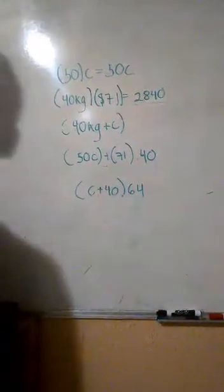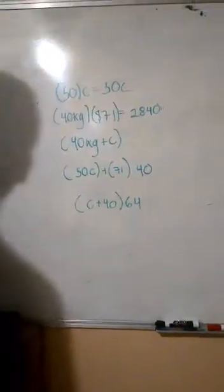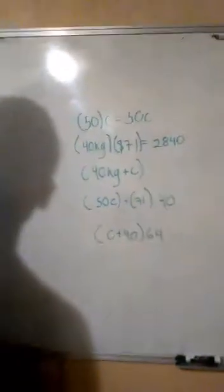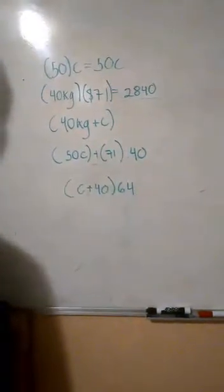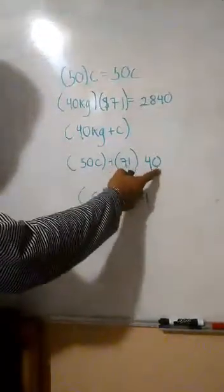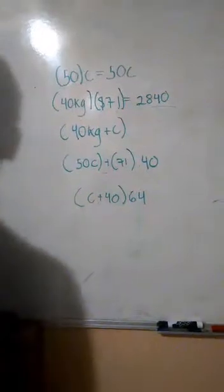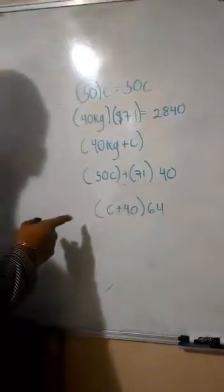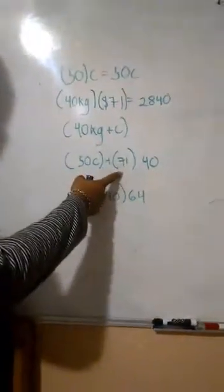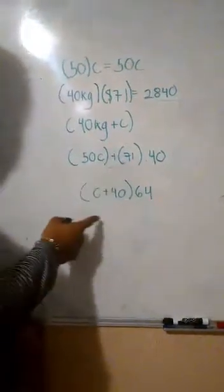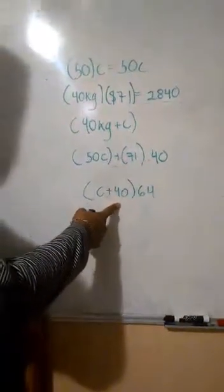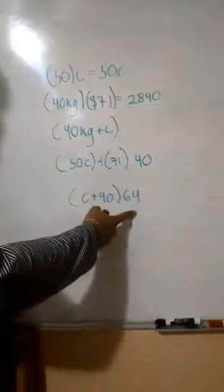Los 40 kilos de uvas y los kilos de cerezas C fue lo que incluimos en la mezcla. Lo que sabemos es que esta mezcla de 40 más C tiene que costar 64 por kilo. Por un lado el costo total de la mezcla es 50C más 71 pesos por 40 kilos de uvas. El precio total de la mezcla es C más 40 kilos de uvas, multiplicado por 64 pesos que tiene que costar la mezcla.